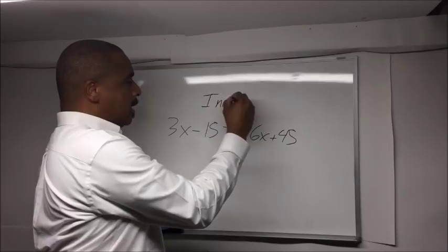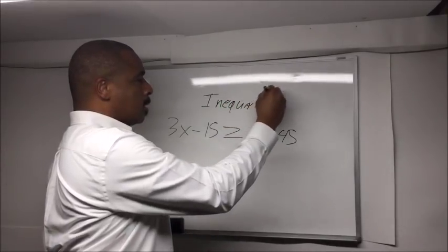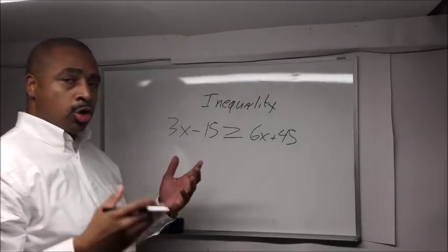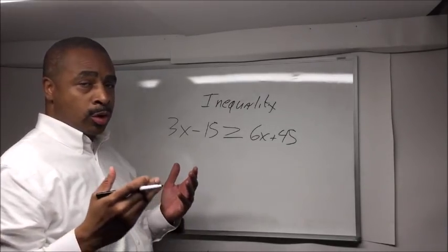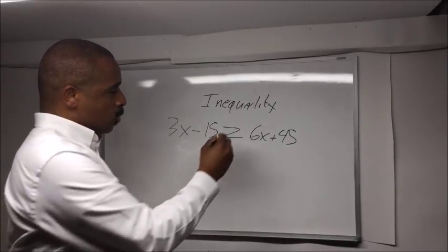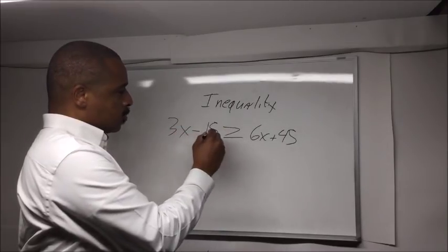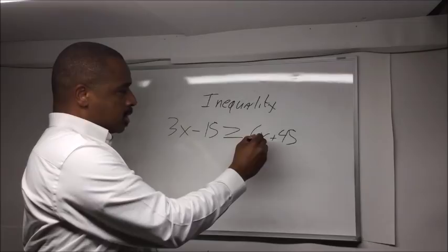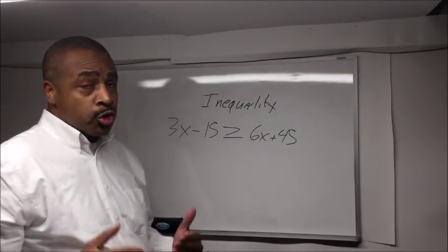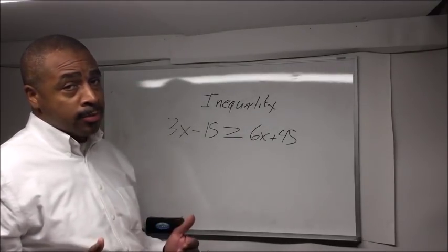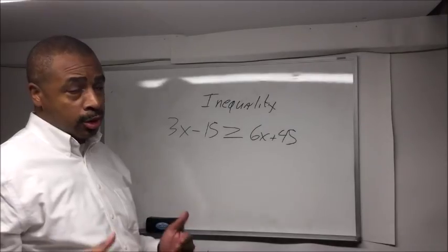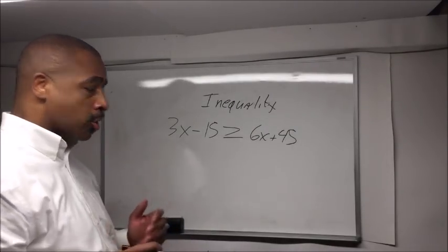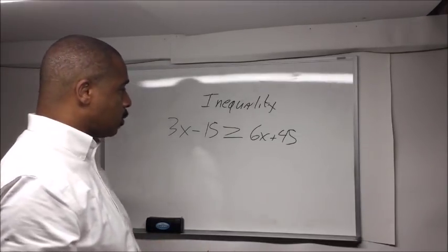An inequality is something that has a greater than or less than and equal to sign. In this case, 3x minus 15 is greater than or equal to 6x plus 45. You still work these kinds of problems out as you would a normal equation, but I'm giving you an example right now of a special rule. The first thing we're going to do is get our x's on one side and have that equal to a number on the other side.